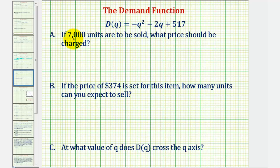So for part A, 7,000 units are to be sold. This does not mean Q equals 7,000 because remember Q is in thousands. And therefore if the quantity is 7,000, that means Q would be equal to 7. So to find the price, we need to find D of 7.